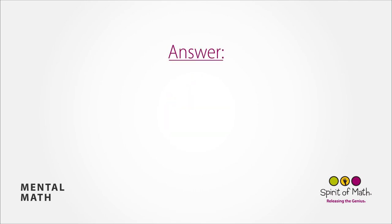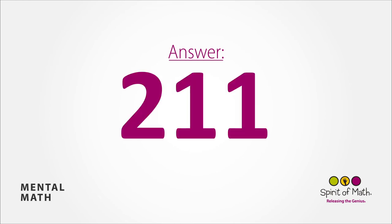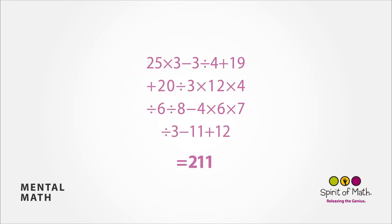And the answer is 211. Starting at the top: 25 times 3 is 75, subtract 3 is 72. Divide that by 4 gives you 18. And add 19 and add 20 is, as I gave you in the hint at the beginning, the same as 19 times 3, which is 57.